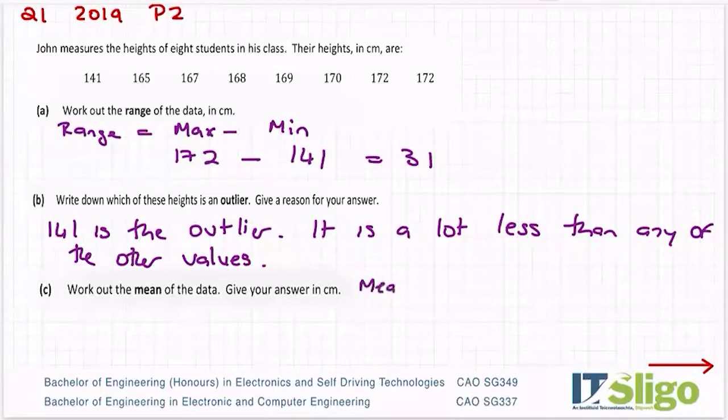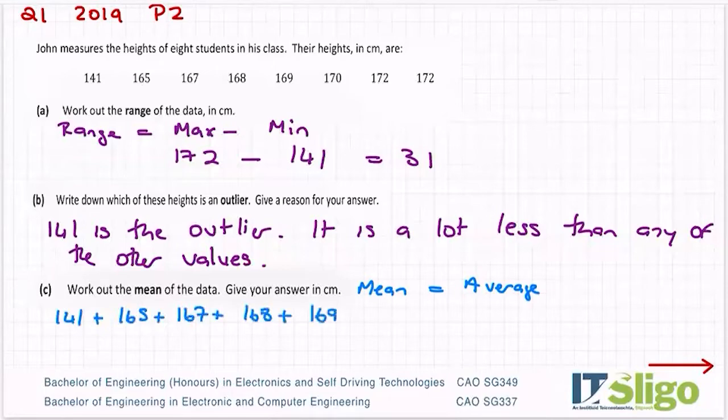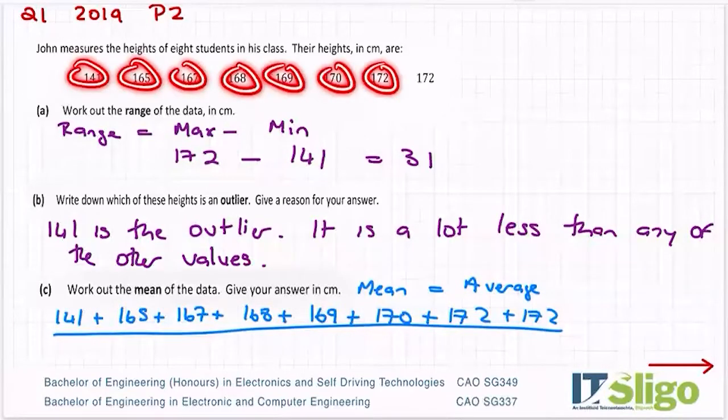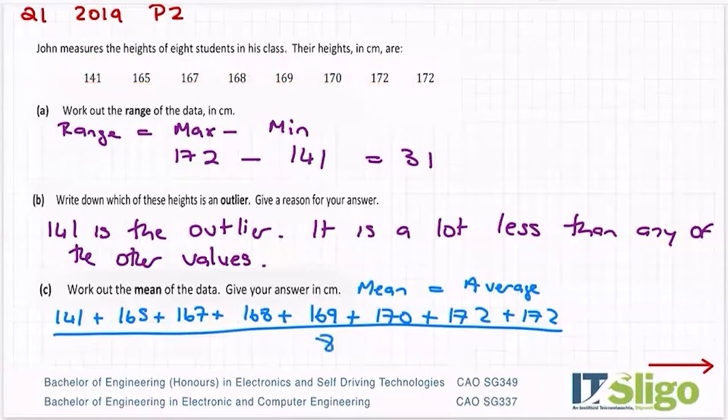So work out the mean then of the data. So work out the average. Remember from the last question that mean was another word for average. So add them all up and divide by the number of numbers. So how many students did we have here? How many numbers have we? One, two, three, four, five, six, seven, eight. So we divide by eight.